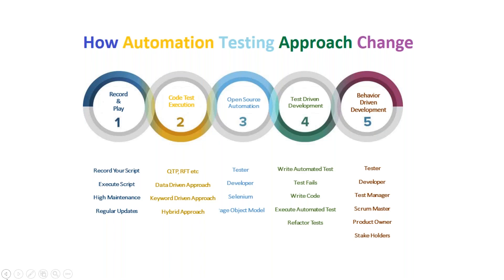Instead of writing functional code first and then testing code, in TDD you write your test code before your functional code. The cycle is: write automated test first, execute it — it fails, then write development code, execute the automated test — it passes, and finally refactor your test as needed. That is the Test Driven Development approach.